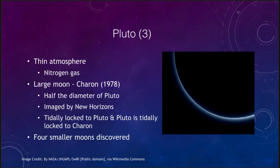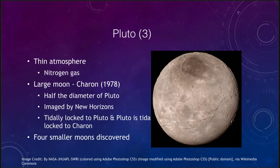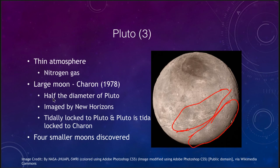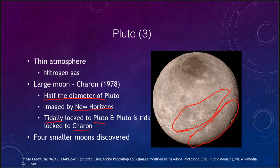Pluto has several moons, and the large moon Charon looks in some ways very similar to Pluto. We can see signs of cratering and some structural changes — perhaps tectonic activity — on Charon as well. The moon is about half the size of Pluto. It is tidally locked to Pluto, just as our Moon is tidally locked to the Earth, keeping one side always facing toward Pluto.